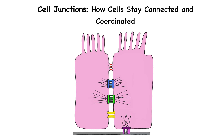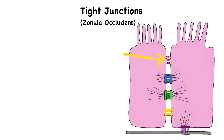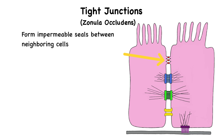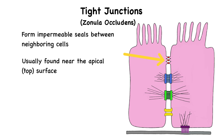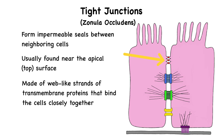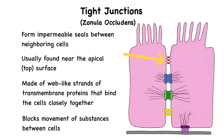Let's look at the five major types of cell junctions, each with a unique role. Tight junctions form impermeable seals between neighboring cells, usually near the apical or top surface of epithelial cells. They're made of web-like strands of transmembrane proteins that bind cells closely together. Their main job is to block the movement of substances between cells, essentially forcing materials to go through the cells rather than between them. A great example is in the lining of your intestines, where tight junctions help prevent digestive enzymes, toxins, and harmful microbes from slipping between cells and reaching deeper tissues.